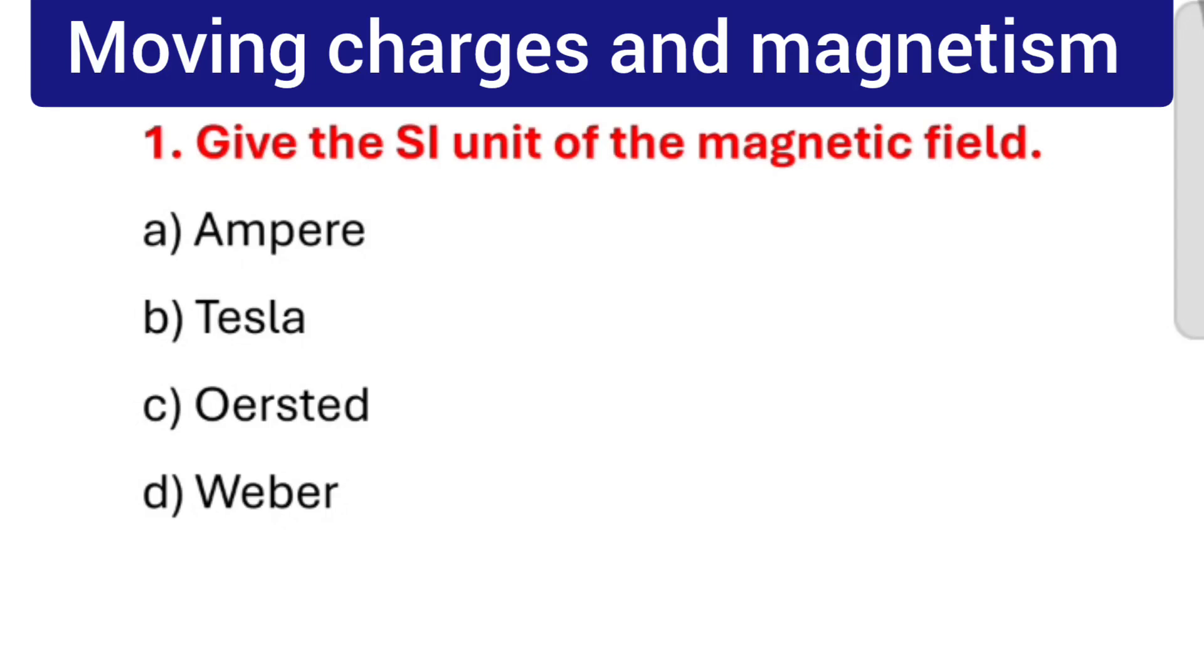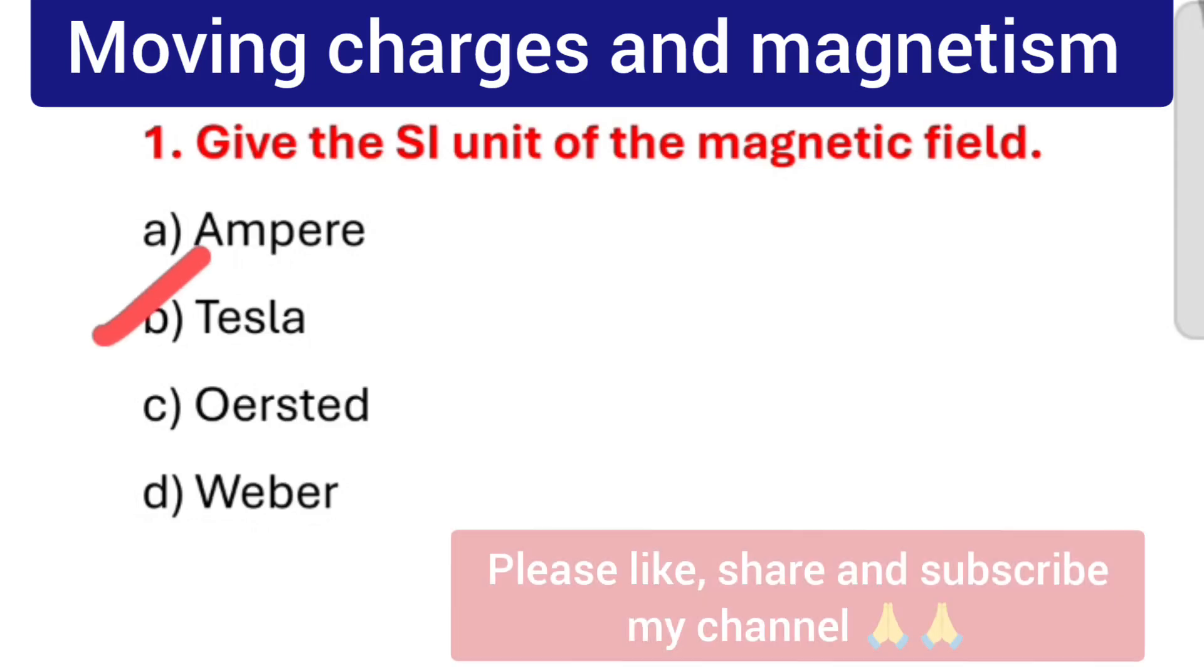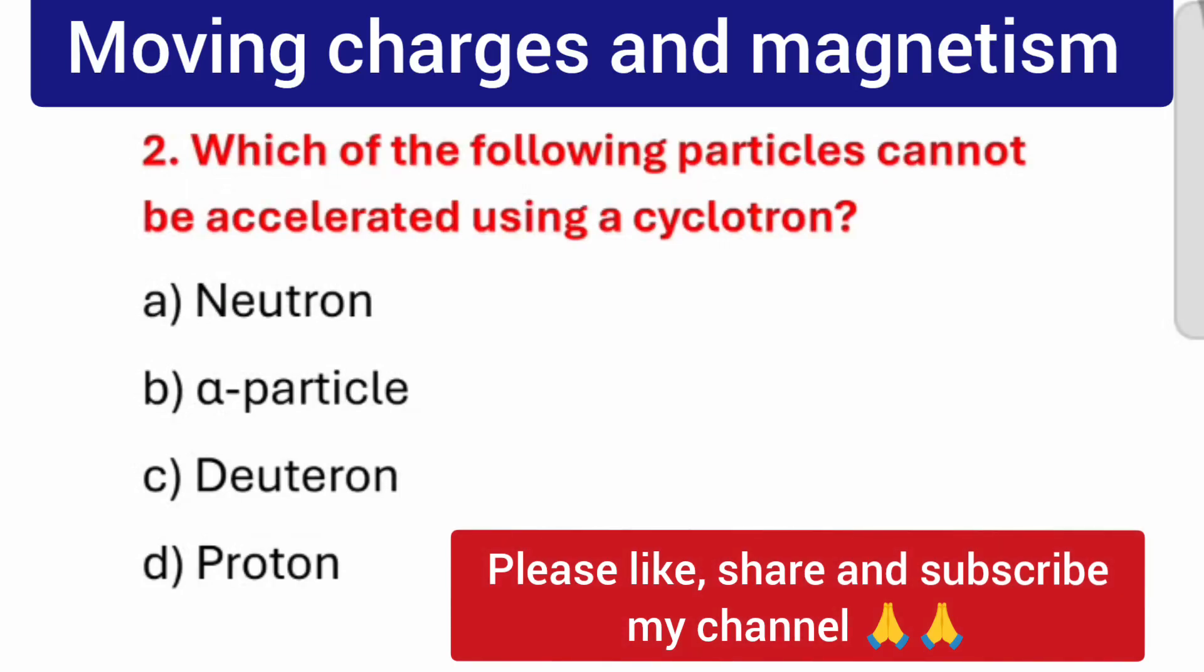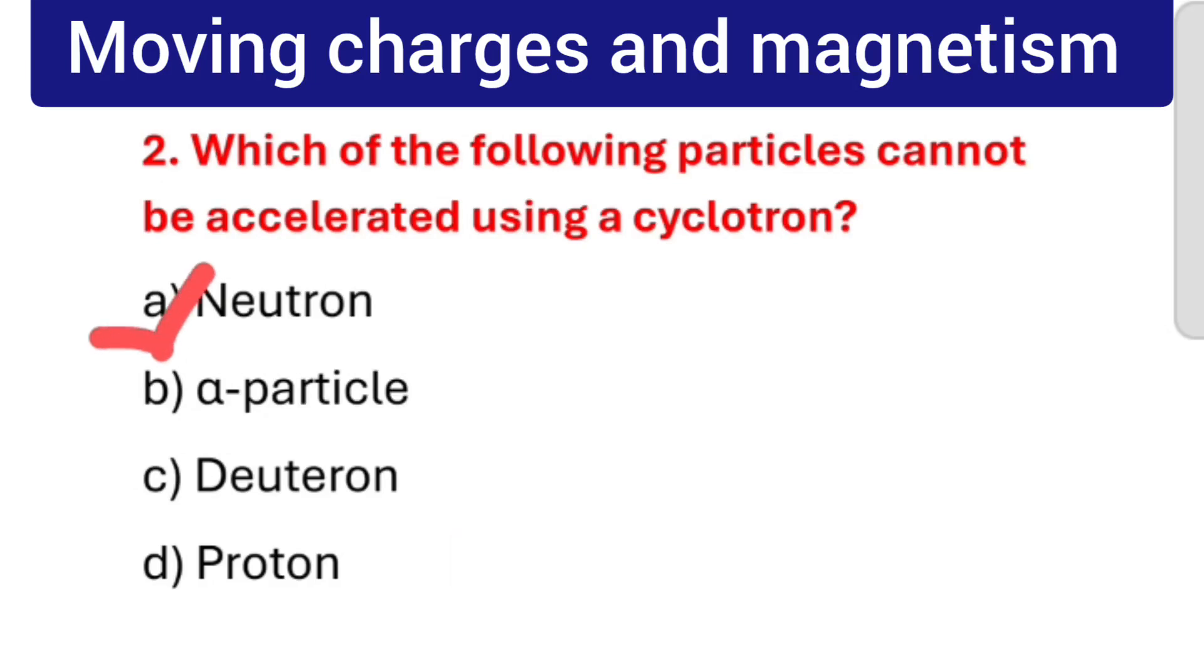Question number 1: What is the SI unit of the magnetic field? The correct answer is Tesla. Question number 2: Which of the following particles cannot be accelerated using a cyclotron? The correct answer is Neutron.